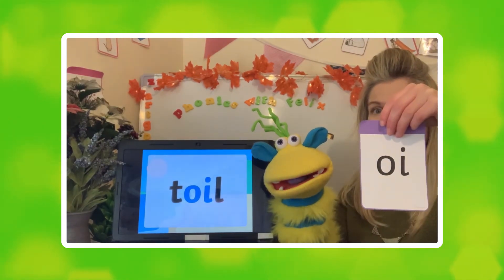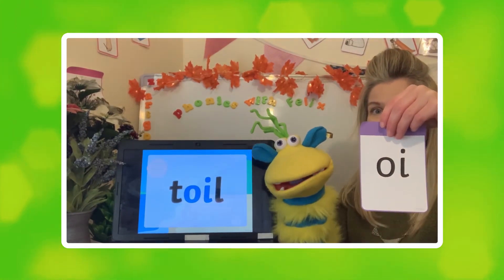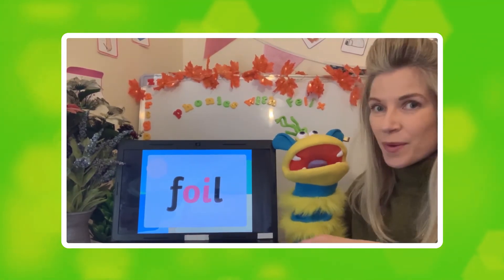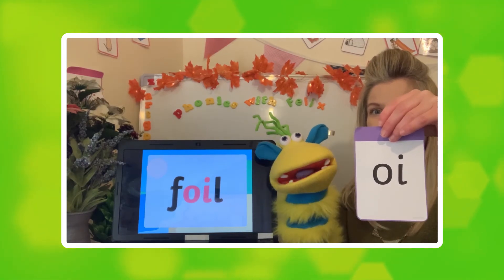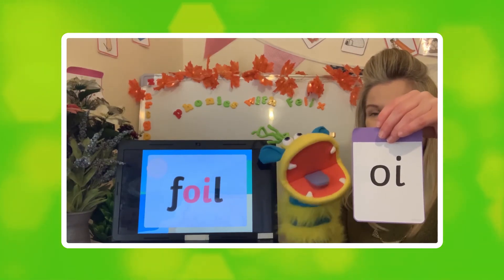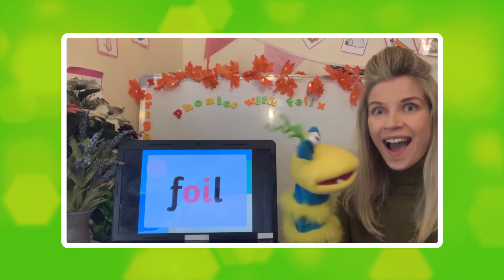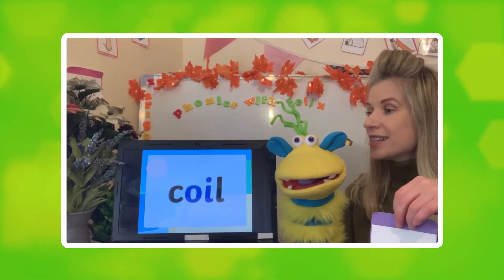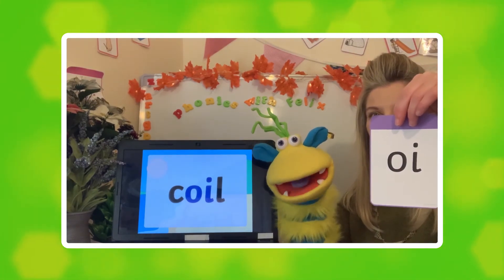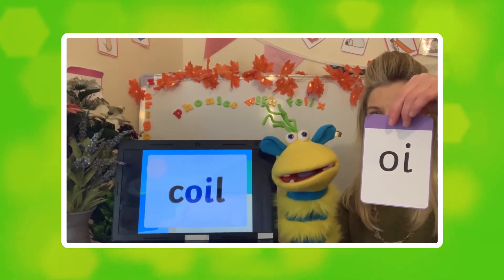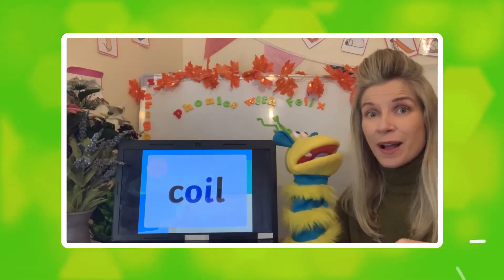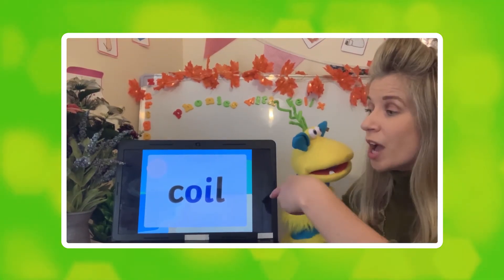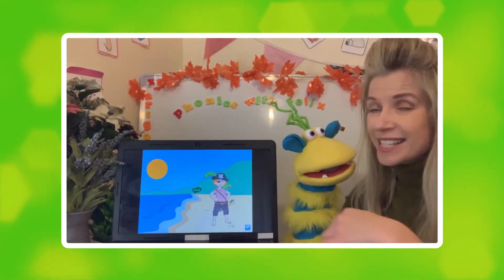What's this one? T-O-I-L. Toil! Wow, well done. What's this one? F-O-I-L. Foil! You haven't got any wrong at all so far. What's this one? K-O-I-L. Coil. Yes, well done. How are you doing at home? Are you getting the words right too? K-O-I-L. Coil. Fantastic.